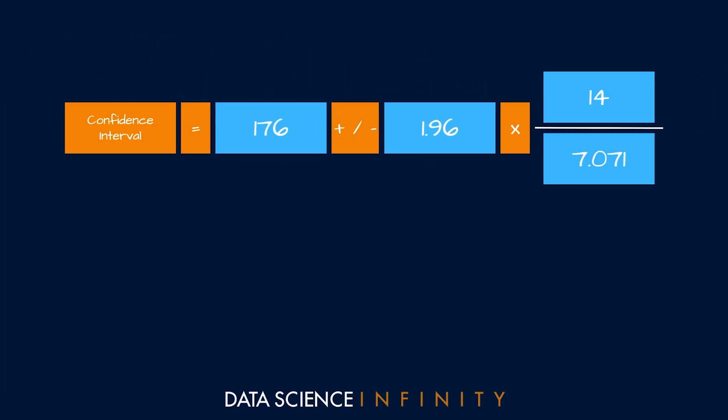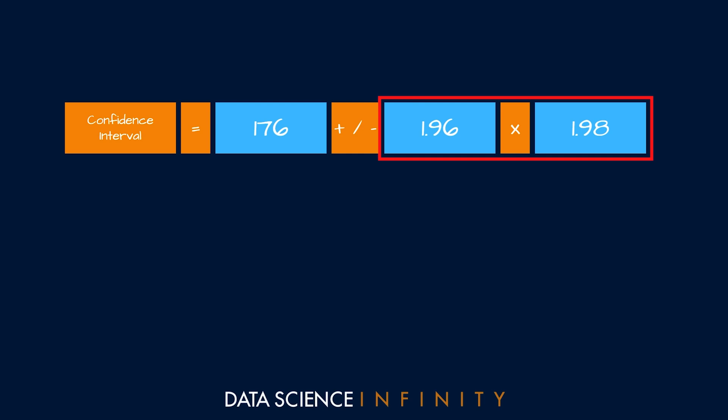And with that we have everything that we need. The first step now will be to calculate the standard error over on the right there, so 14 over 7.071 which is equal to 1.98. Now we have that we can calculate the margin of error so our z-score of 1.96 multiplied by the standard error of 1.98 which gives 3.88. And for complete clarity in our example here this represents 3.88 centimeters. Our confidence interval formula tells us to add and subtract this value from our sample mean of 176 centimeters to get our upper and lower confidence interval bounds.